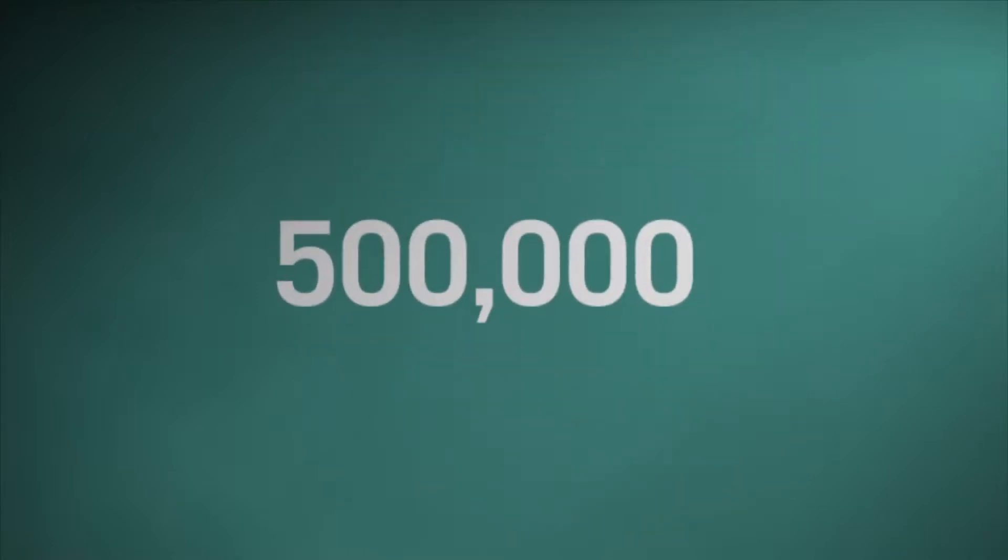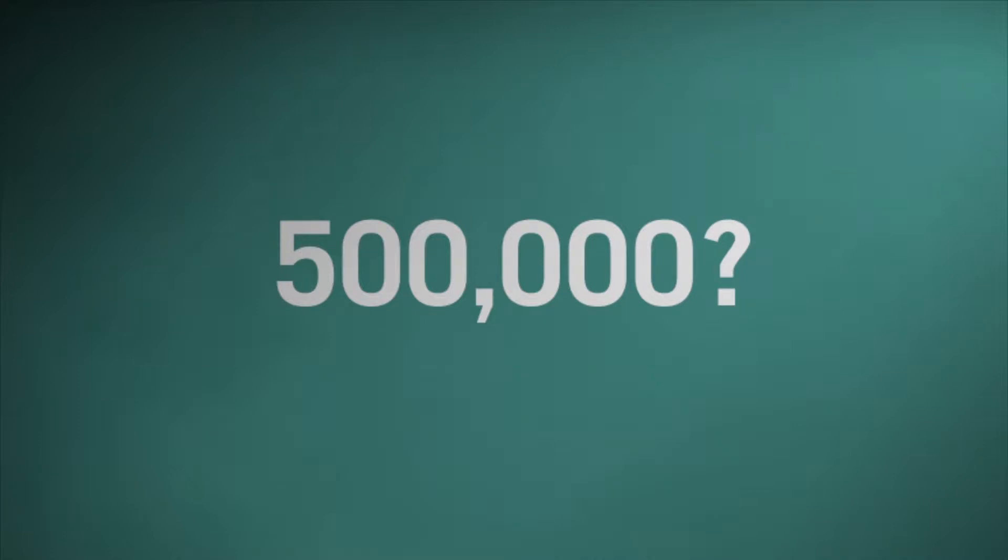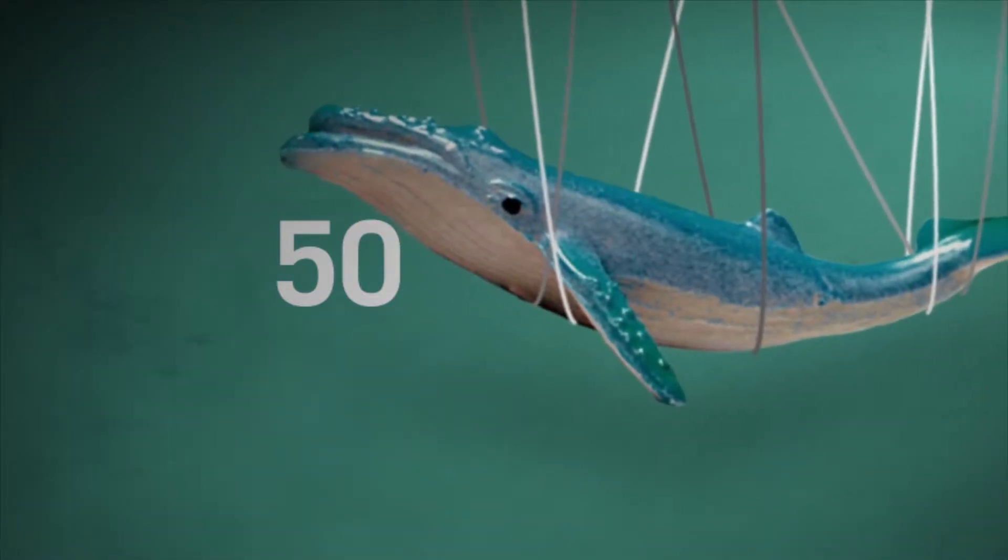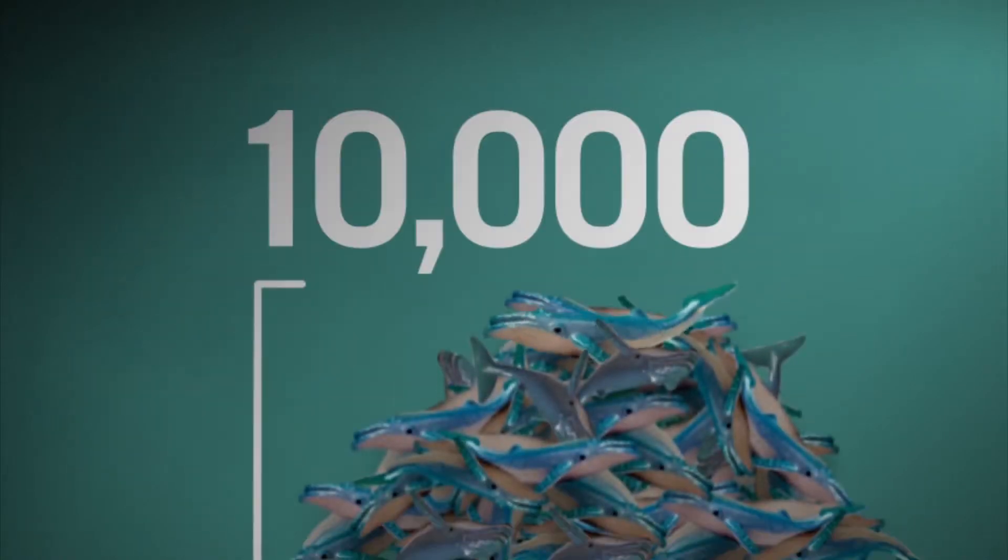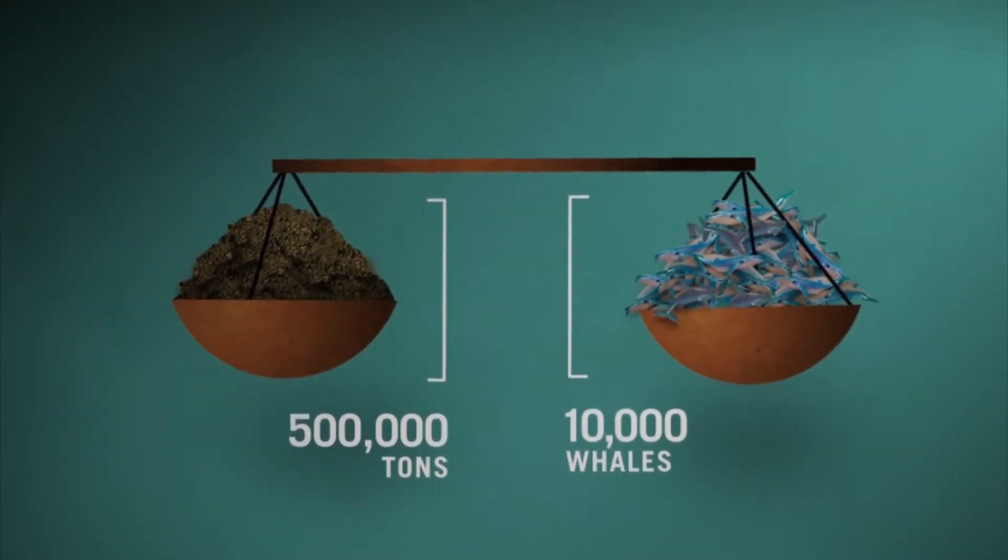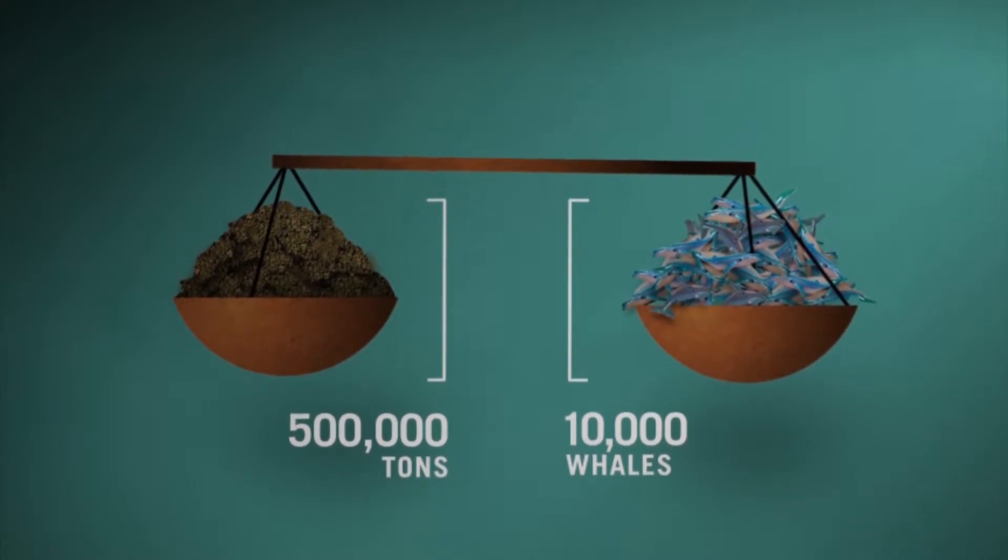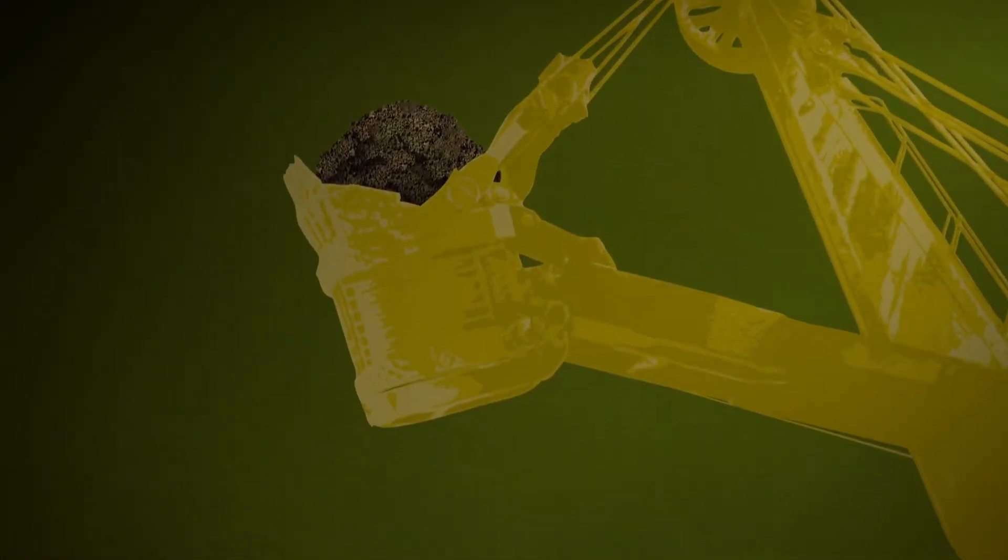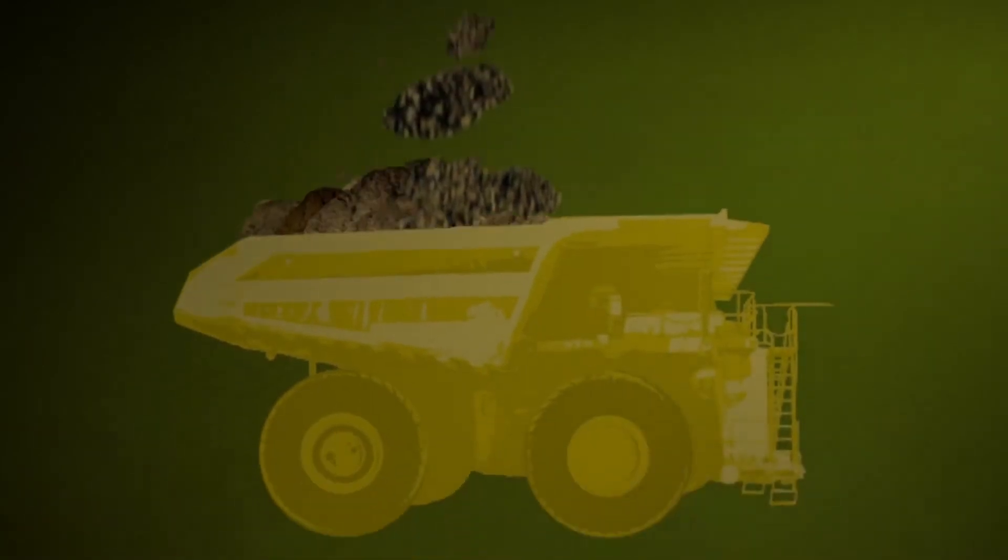So exactly how much is 500,000 tons? Well, a humpback whale, one of the world's largest animals, weighs about 50 tons, which means you'd need about 10,000 of them to balance the scales. So how does Kennecott deal with this nearly inconceivable volume of blasted rock? Well, the simple answer is that you pick it up with giant shovels that can carry 100 tons in a single scoop and dump it into massive haulers.